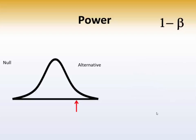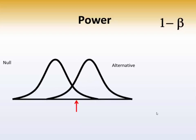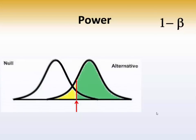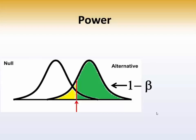But what if the alternative hypothesis and the null hypothesis actually overlapped? Take a look at where that critical value is. The critical value — let's say 1.96 — the green represents that proportion of the alternative hypothesis that's above the critical value. The yellow represents that proportion below the critical value. So the green essentially represents 1 minus beta, the power, and the yellow represents beta, or the probability of making a type 2 error.